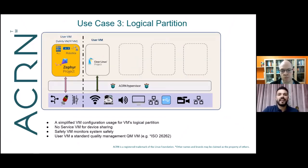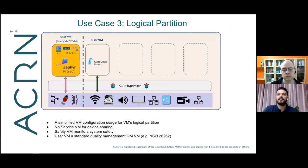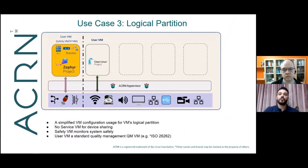Finally, if we don't need resource sharing and just want to run a couple of VMs directly on top of ACRN, the logical partition allows us to do that. In this case, we won't have a device model or a service VM in the traditional sense — just a safety VM and user VM that are partitioned and segregated to run seamlessly on top of ACRN. That was our introduction to ACRN and its different use cases.